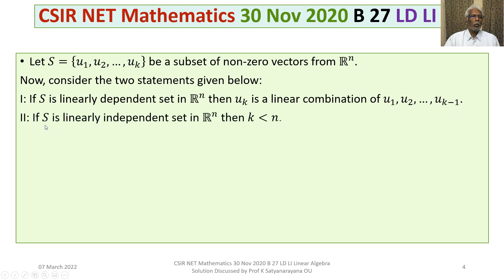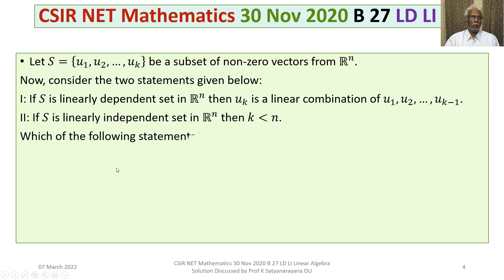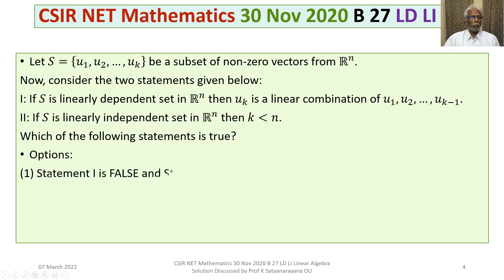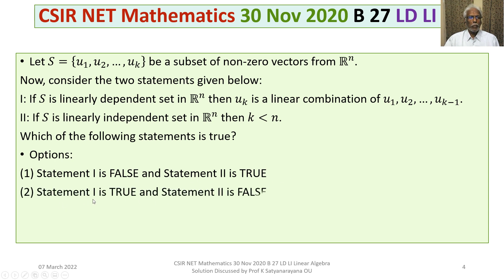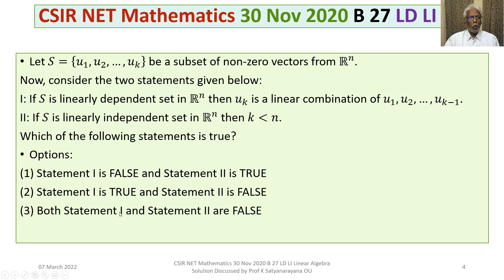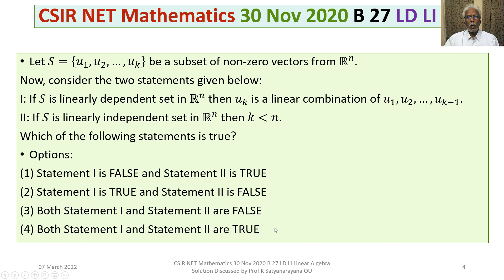Statement 2: if S is a linearly independent set in Rn, then k is less than n. Which of the following statements is true? Option 1: Statement 1 is false and Statement 2 is true. Option 2: Statement 1 is true and Statement 2 is false. Option 3: both Statement 1 and Statement 2 are false. Option 4: both Statement 1 and Statement 2 are true.